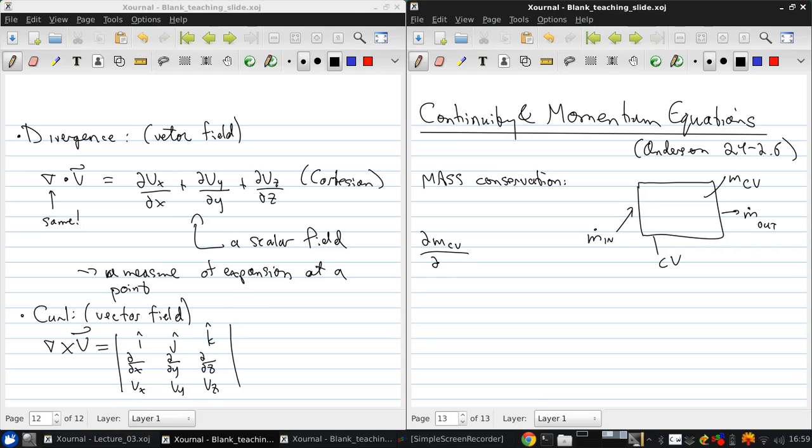Then mass conservation simply says that mass can't be created or destroyed. So the time rate of change of mass in the control volume is equal to the difference between the inflow and outflow.